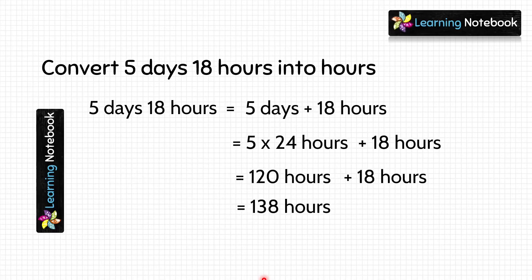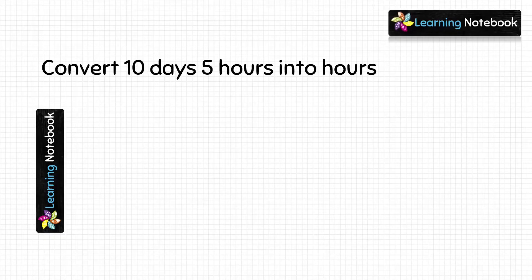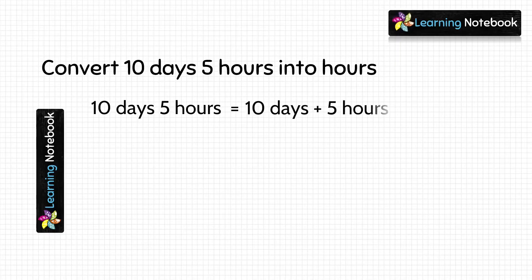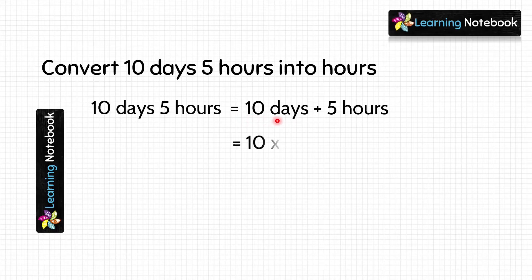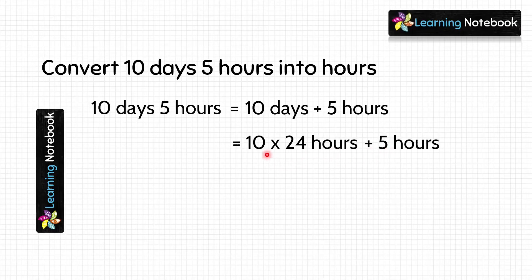Let's do one more question: convert 10 days 5 hours into hours. Again, students, we need to understand that 10 days 5 hours equals 10 days plus 5 hours. So let's convert these 10 days into hours and then simply add 5 hours to it. We know 1 day equals 24 hours, so 10 days equals 10 multiplied by 24 hours.